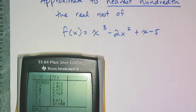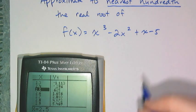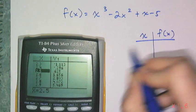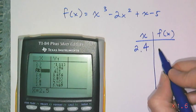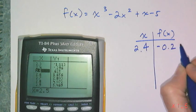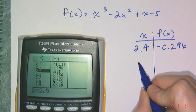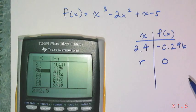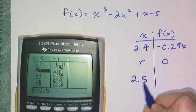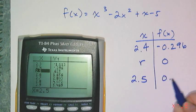I have to look for where it changes from negative to positive. And so I set my table up. At the x value of 2.4, I have a negative 0.296. I don't know my root, but I know the y value at the root is 0. And at 2.5, I have 0.625.